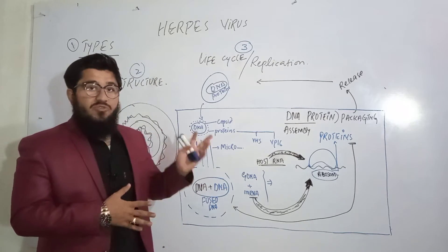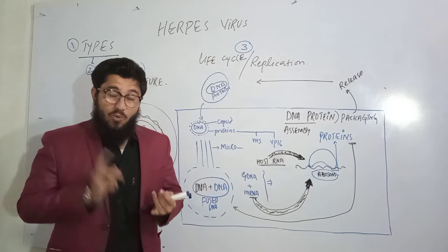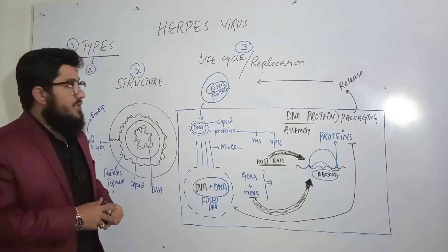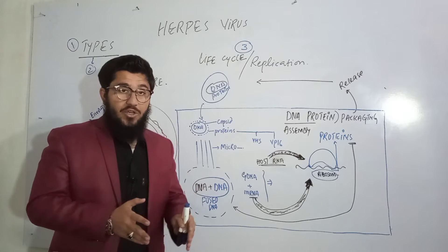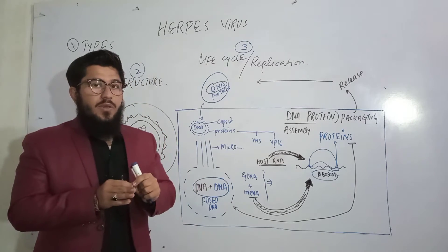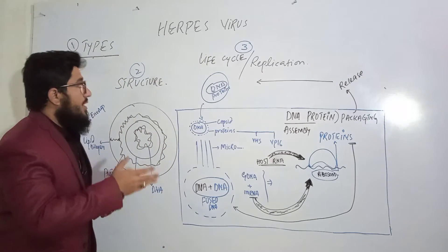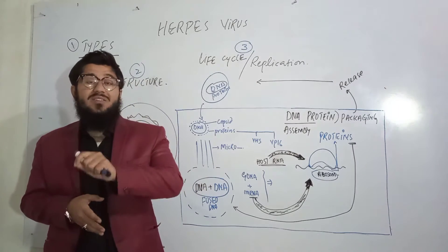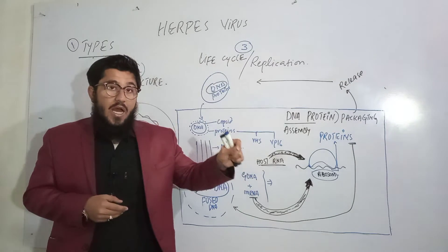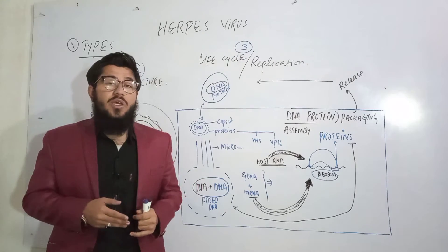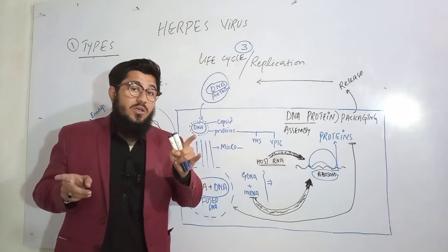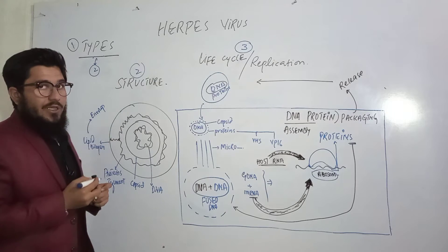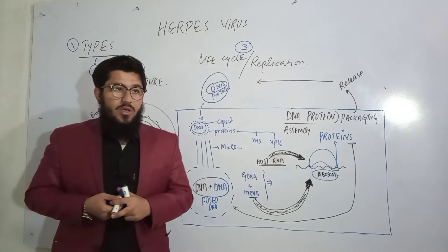Herpes virus. This lecture will be made super easy in three important points: the types of the herpes virus, the structure of the herpes virus, and the life cycle or replication of the herpes virus. The point number one is the types of the herpes virus. There are several types, but today we'll talk about those responsible for causing disease in humans. Most commonly known are herpes simplex type 1 and herpes simplex type 2.